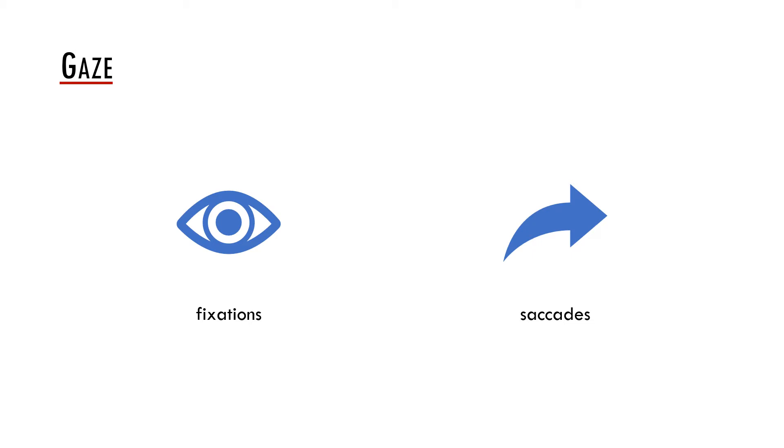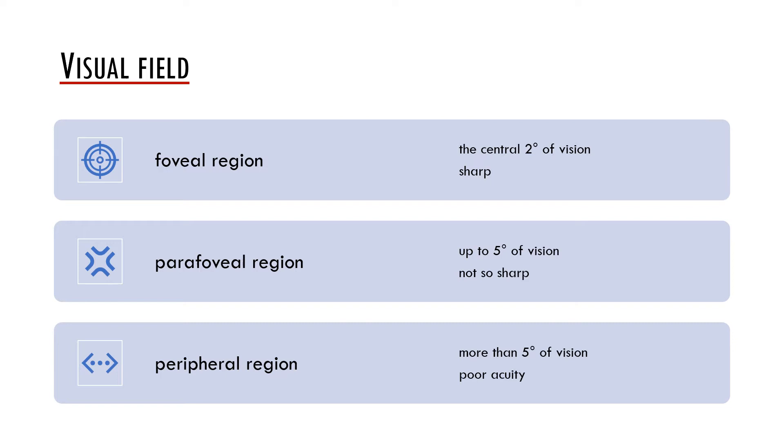One of the important questions is how much do we see during a fixation because this may determine how much information we are able to extract and process via a fixation. We differentiate three main regions in the visual field. For reading and for many other cognitive processes, the foveal region is crucial because the part of the text which is in the foveal region is seen as sharp. The foveal region is delimited by the two central degrees of visual angle from fixation. This means that while fixating a text we can see sharply about seven to nine letters.